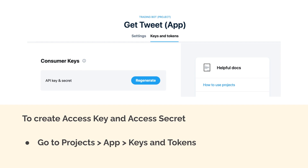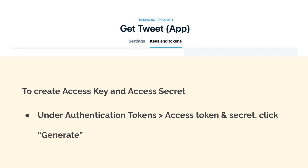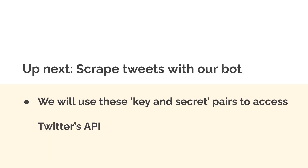To create that second pair, go to Projects, then click on your app. In this example, my project is called Trading Bot and my app is called Get Tweet. Then click on Keys and Tokens right beside Settings. Go to the section Authentication Tokens, Access Token and Secret, and click Generate. Make sure to save those. We now have two key-secret pairings — the consumer pair and the access pair — four values in total: a consumer key, a consumer secret, an access key, and an access secret. We're going to use those to access Twitter's API via our bot.